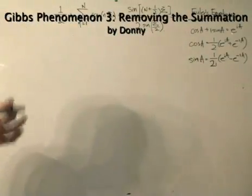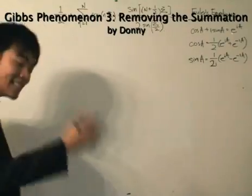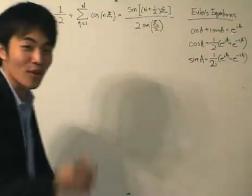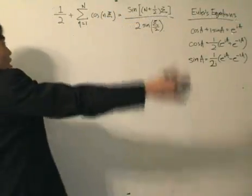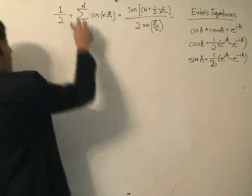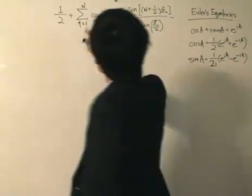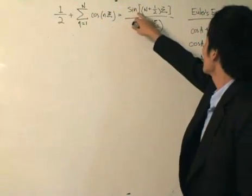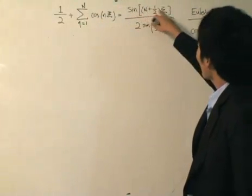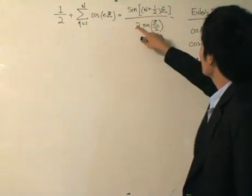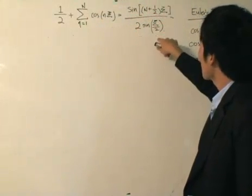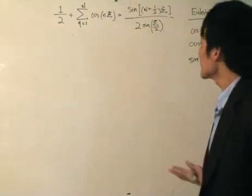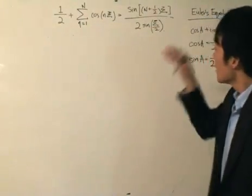The identity is an interesting one — it's not easy to see and it's not easy to prove, so I want to just write it out. Half plus summation n equals one to capital N of cosine(nε) is equal to sine((N + 1/2)ε) divided by 2·sine(ε/2). We're just introducing a dummy variable epsilon inside here.